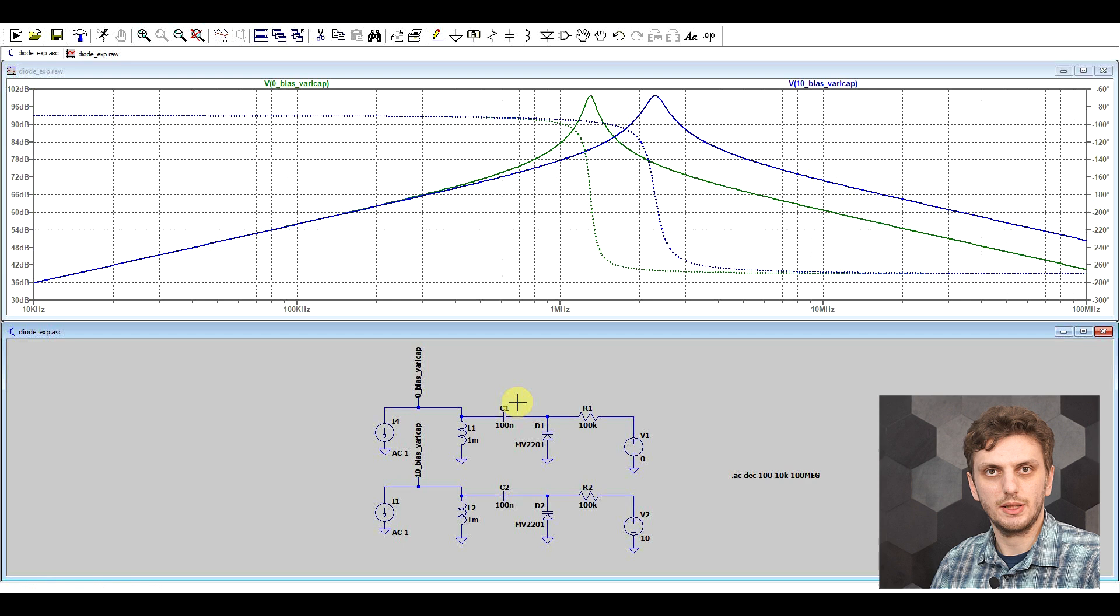So by default, the diode models in LTSpice and in the Spice language in general already have this capacity variation with the applied DC bias. So it's implemented with the proper varicab diodes, but it's also implemented with normal types of diodes.